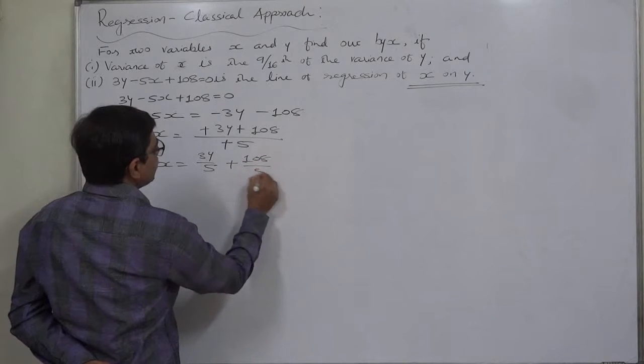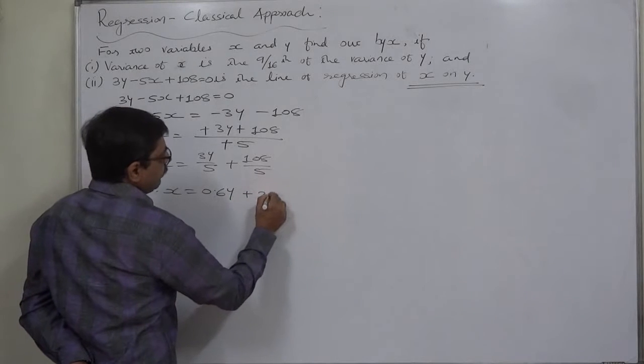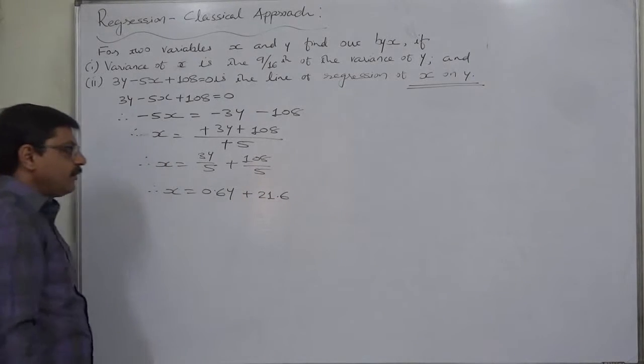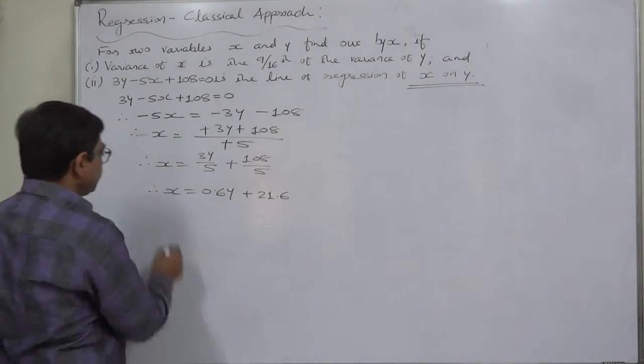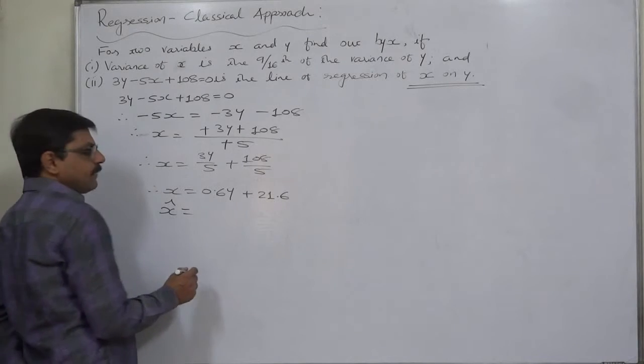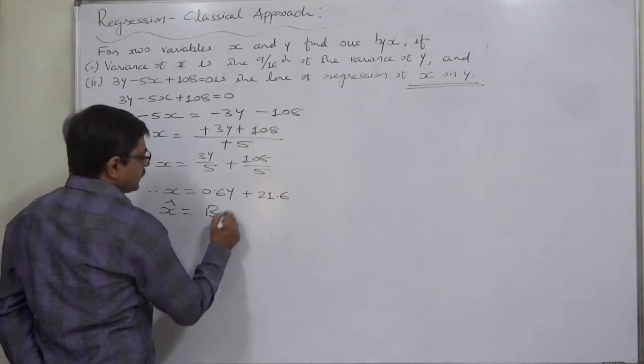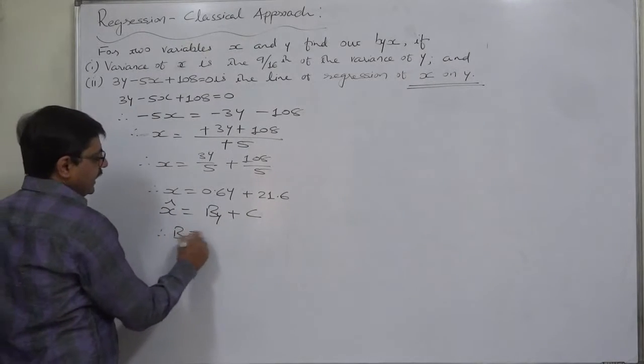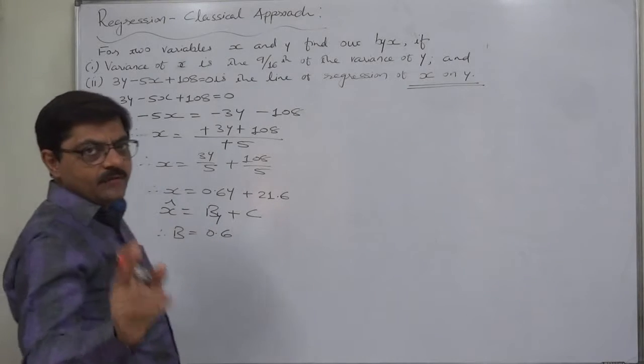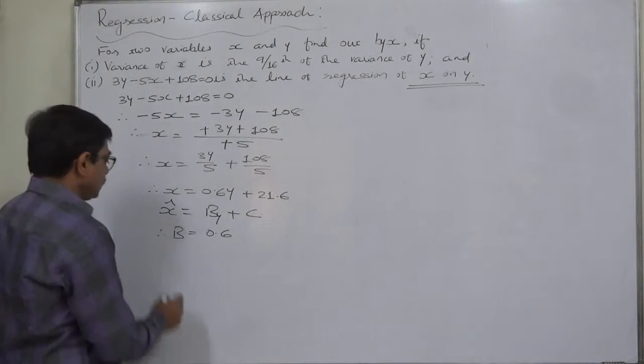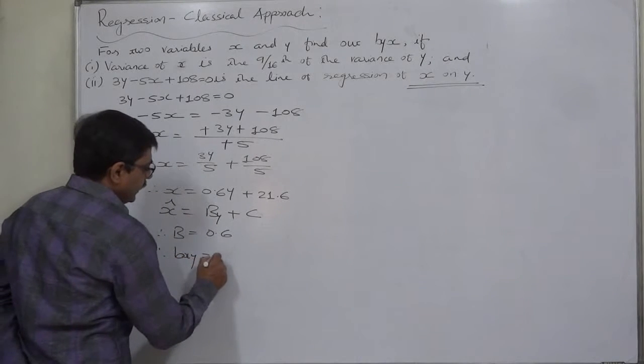So let's make all these positive. Therefore x equals 3y upon 5 plus 108 upon 5, that means x equals 0.6y plus 21.6. We have no role for 21.6 at this stage. Let's compare it with its standard form, that is x estimated equals b_xy plus c. So we can say that b is 0.6, and in the line of regression of x on y, b is b_xy. That means b_xy equals 0.6.